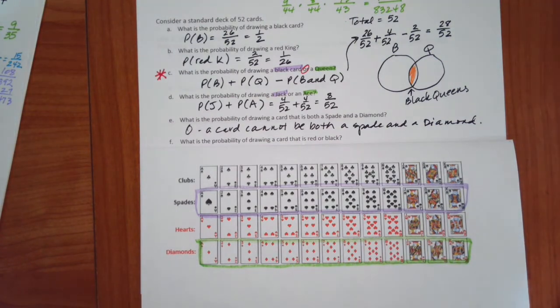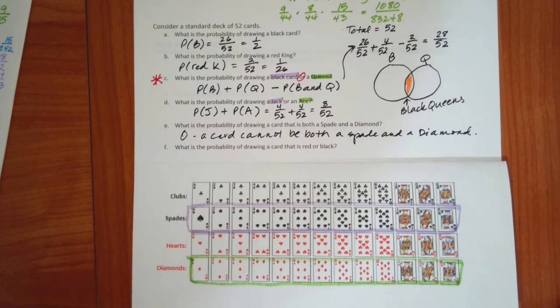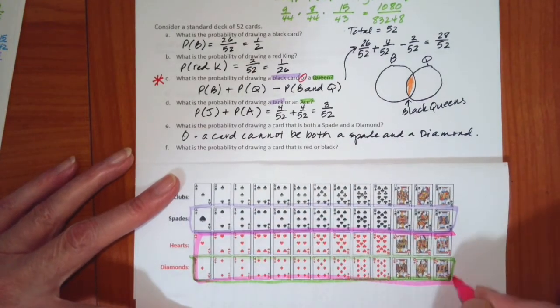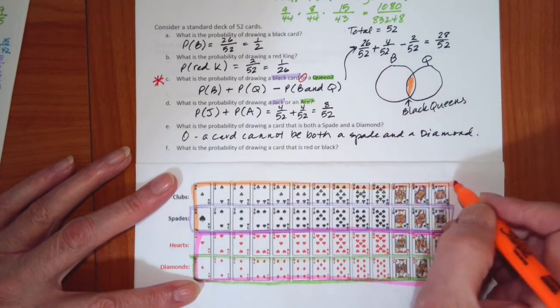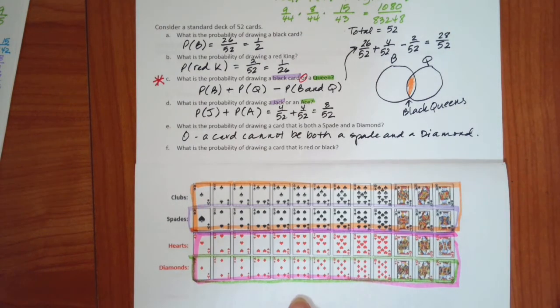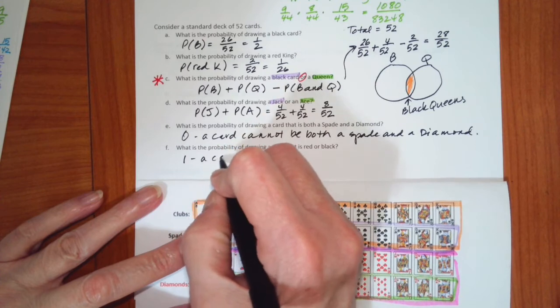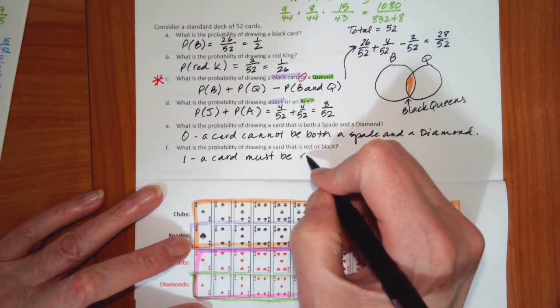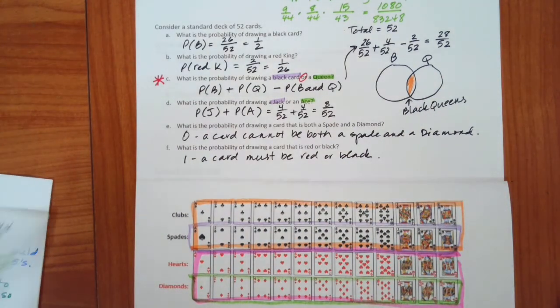Okay, and then for our last one, I'm out of maps. I'll just use another one. What is the probability of drawing a card that is a red or a black? So I'm going to add these two. So here's the red. Here are the black. And you can see that it's everything. So the probability is 1. A card must be red or black. So it's so important to look at the wording and make sure that you are understanding what is and and what is or.